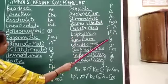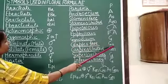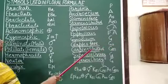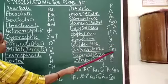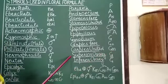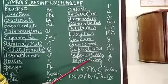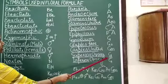Gynoecium is represented by capital G. If the carpels are free, the number is written below G as subscript. If they are united, the number is enclosed within brackets. If the ovary is superior, a bar is put below capital G. If the ovary is inferior, the bar is put above G.